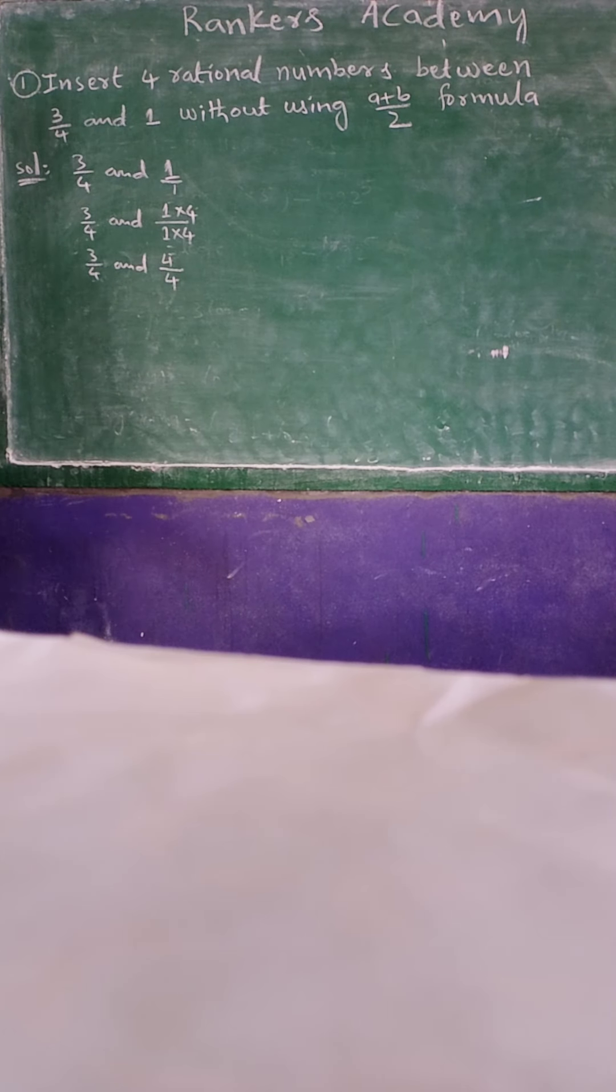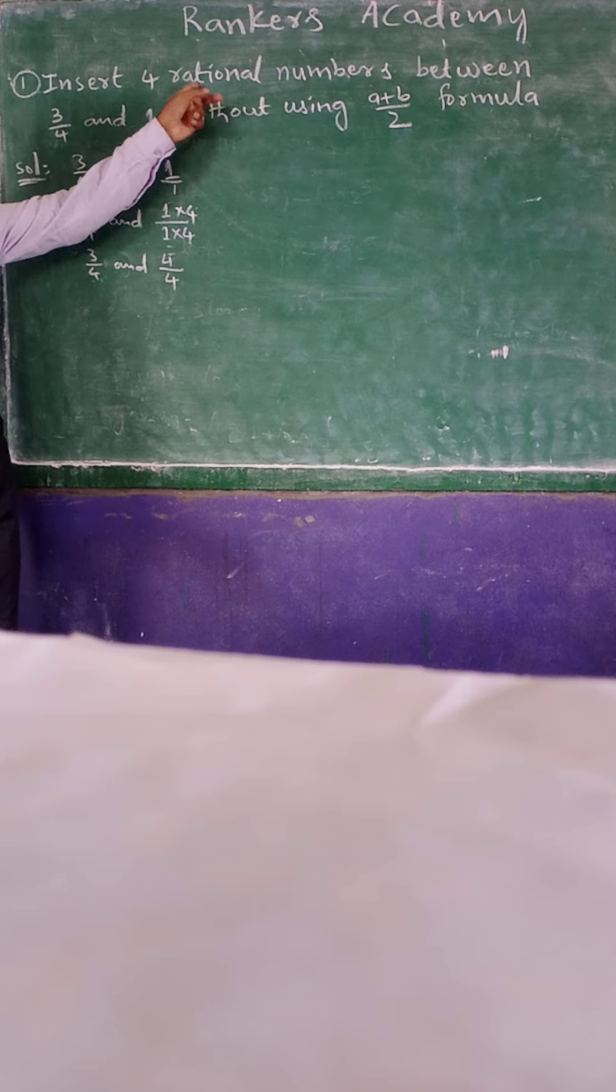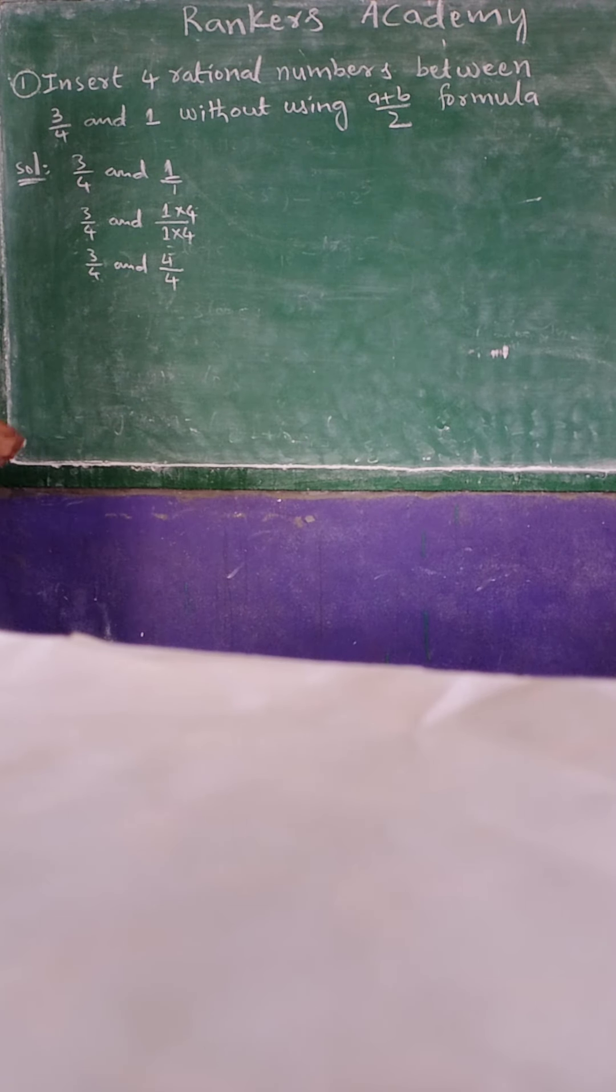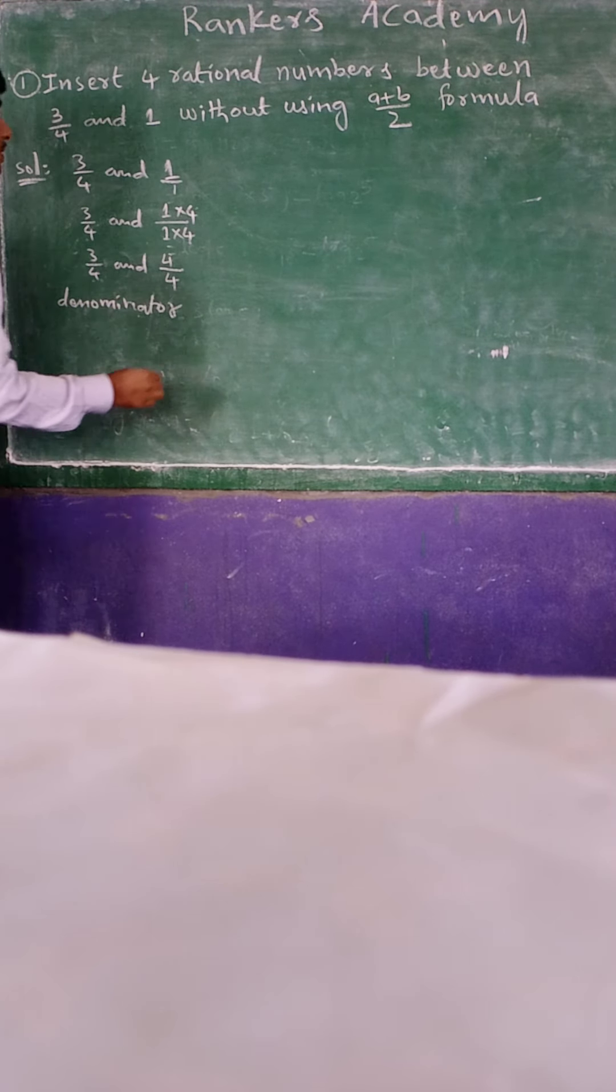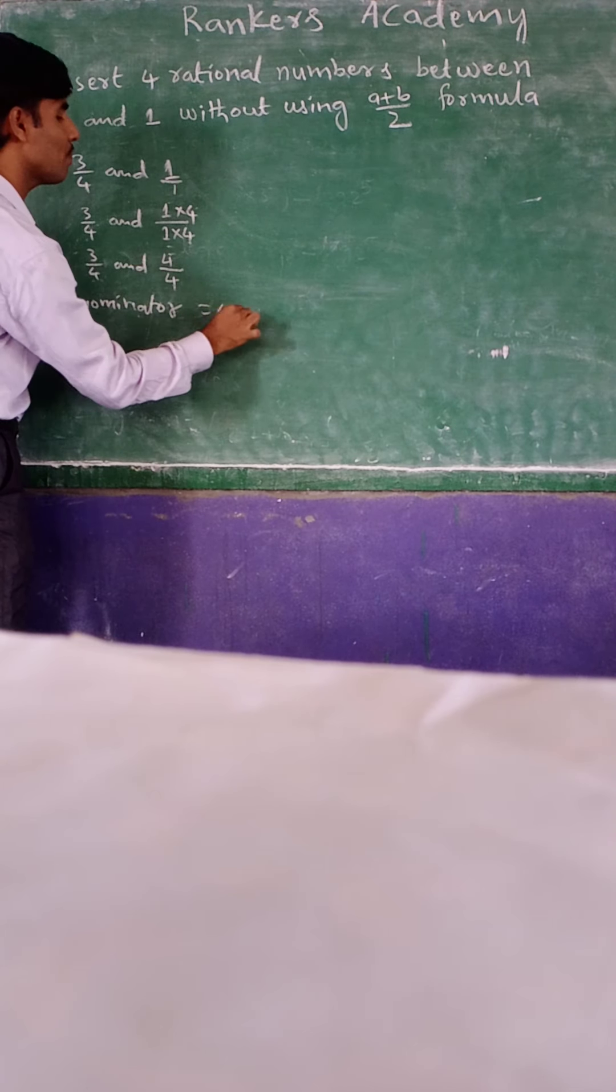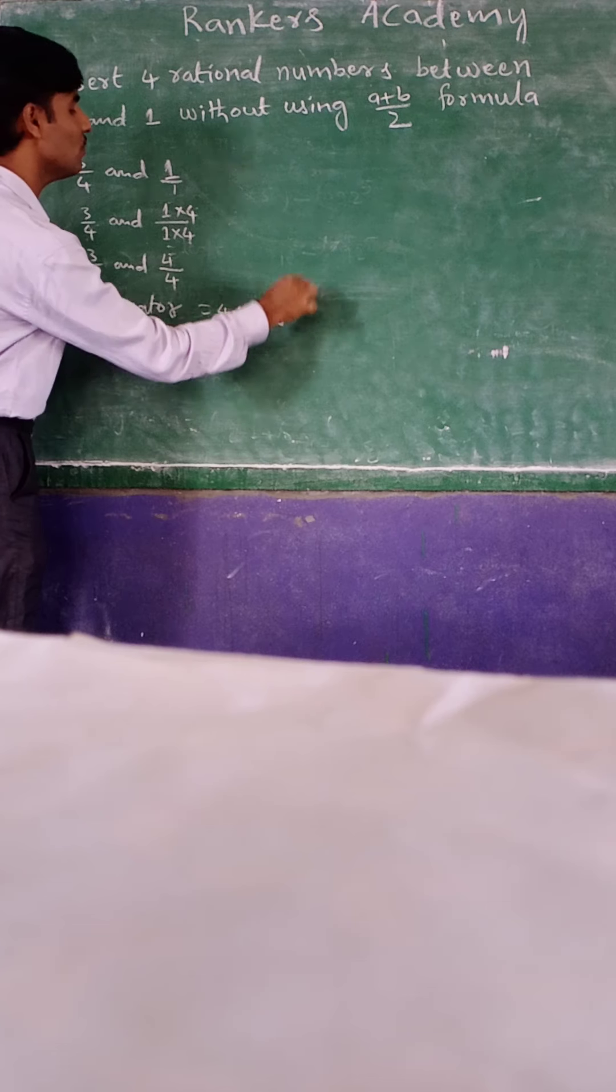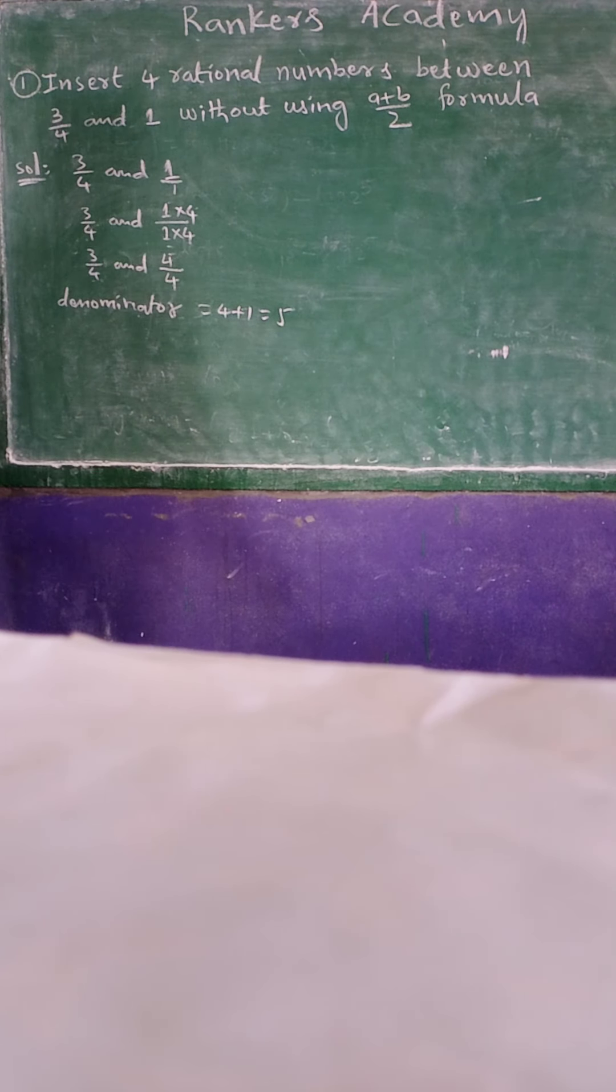Now see how many rational numbers we have to find. 4 rational numbers. 4 rational numbers means your denominator equal to 5. So what we have to do.